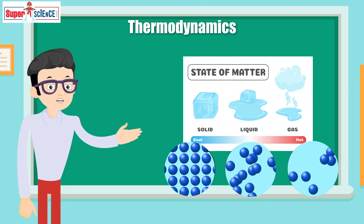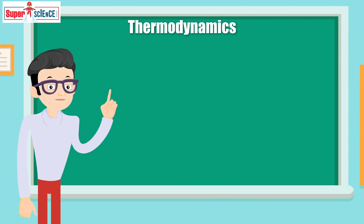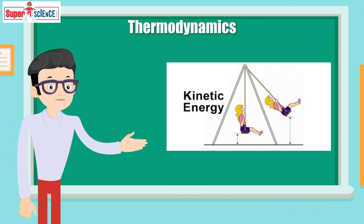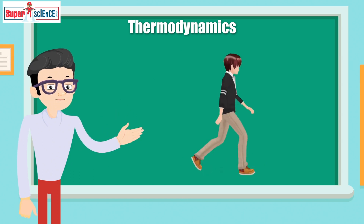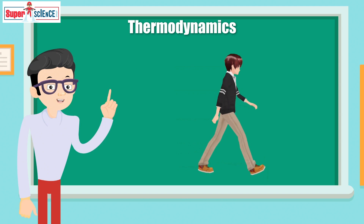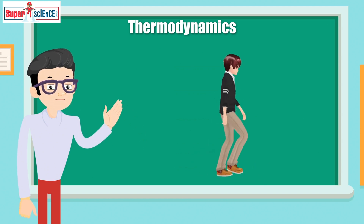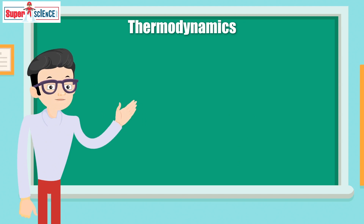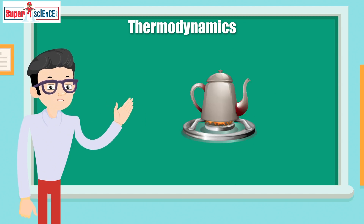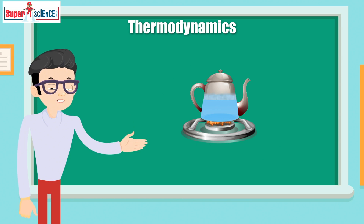Their movement means that they possess kinetic energy. Kinetic energy is the energy that all moving things have, whether they are particles or people like you and me — even while walking, you have a certain kinetic energy. You must know that energy cannot be created or destroyed; it is only converted from one type to another. When you heat some water to make steam, the heat energy of the flame is converted into kinetic energy in the particles of water.